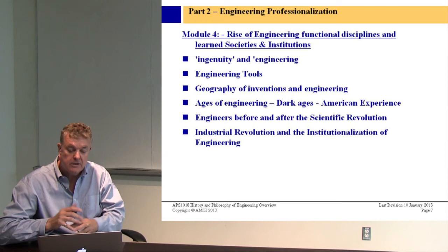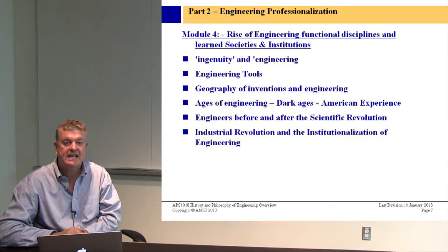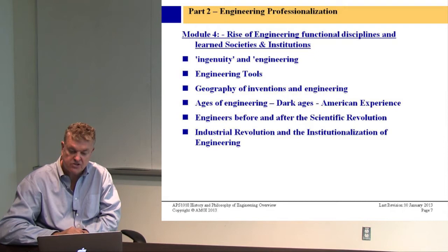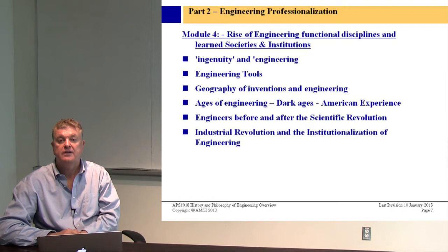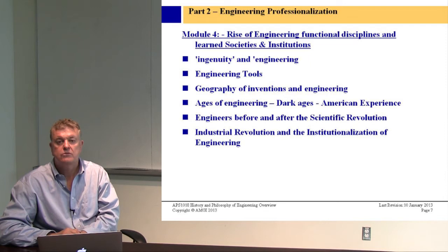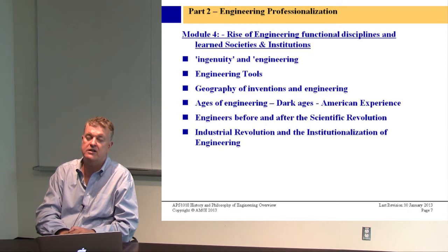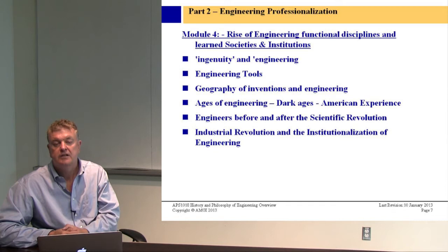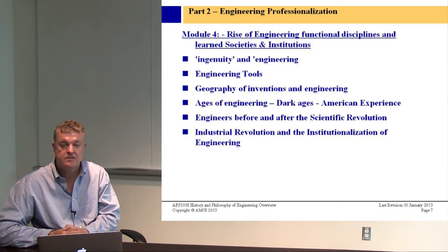As machines became more complex and evolved into trains, the Institution of Mechanical Engineers was formed by George Stevenson in 1847. These institutions exist today in the same disciplines developed in the early 19th century. One wants to question: why are we still using disciplines shaped 150 years ago? If we're calling for multi-disciplined engineers, why do we have institutions still designed around 200-year-old concepts of how the world worked?